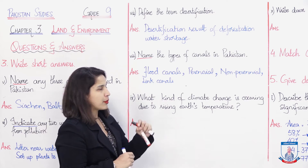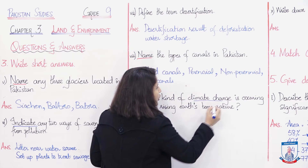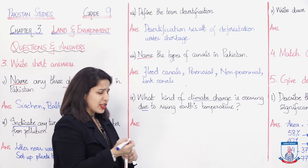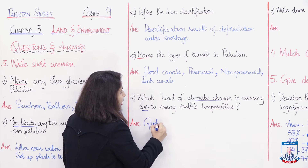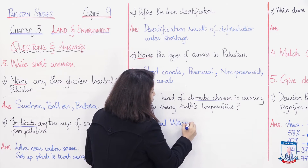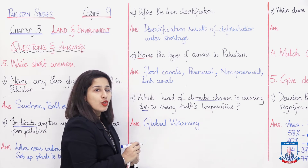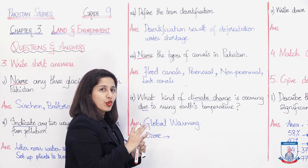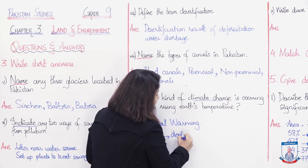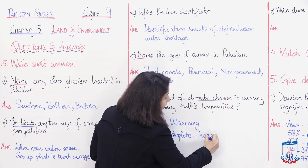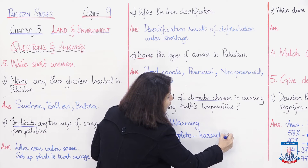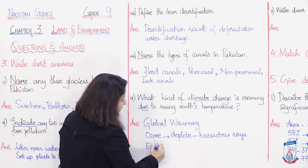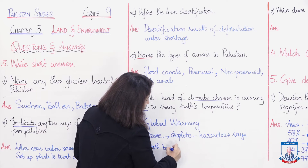The next question: What kind of climate change is occurring due to the rising Earth's temperature? We have to discuss climate change due to rising temperature. In term, this is global warming. Global warming is occurring because the ozone layer that covers the Earth is being depleted in patches, allowing hazardous sun rays to reach the ground, causing Earth's temperature to rise.